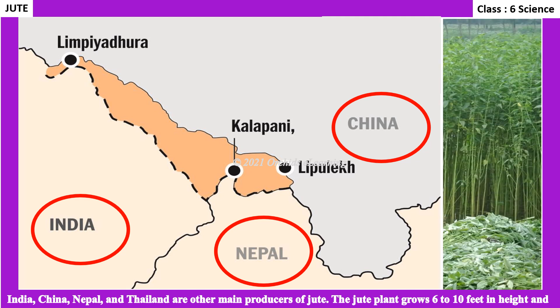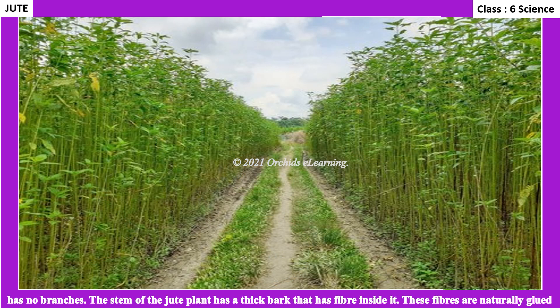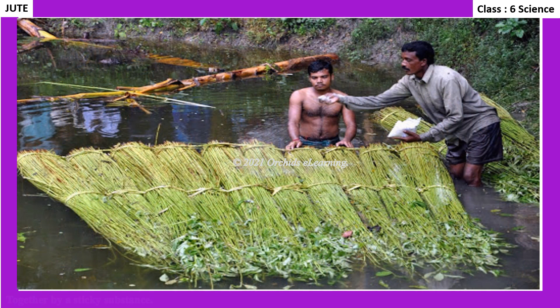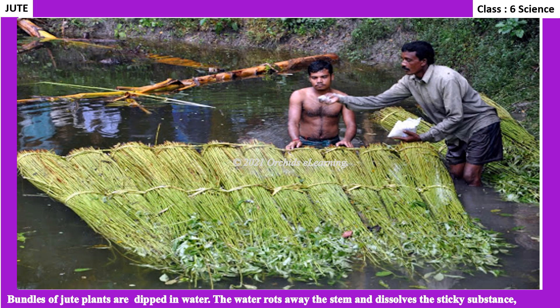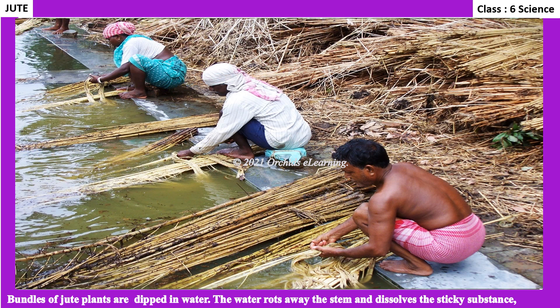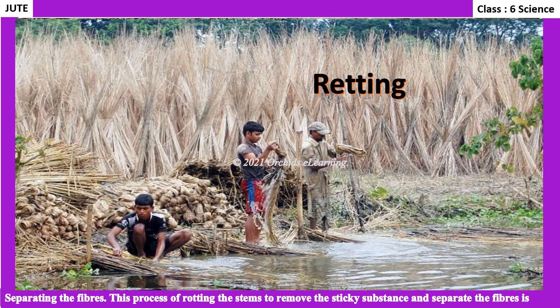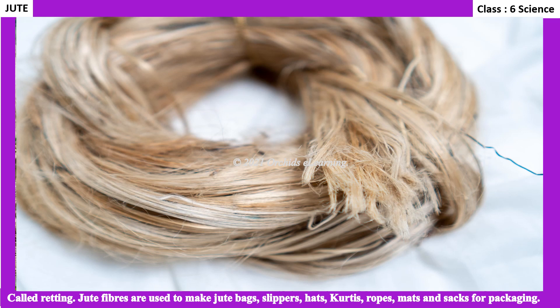The jute plant grows 6 to 10 feet in height and has no branches. The stem has a thick bark containing fiber inside it. These fibers are naturally glued together by a sticky substance. Bundles of jute plants are dipped in water, which rots away the stem and dissolves the sticky substance, separating the fibers. This process of rotting the stems to separate the fibers is called retting.